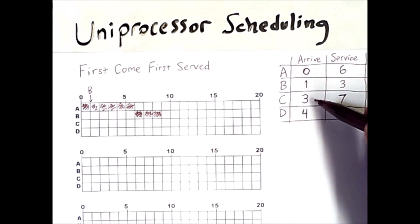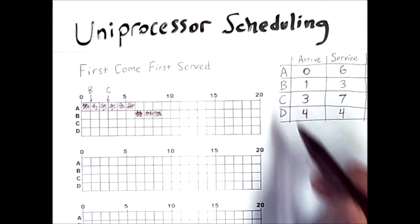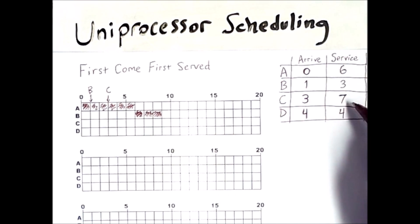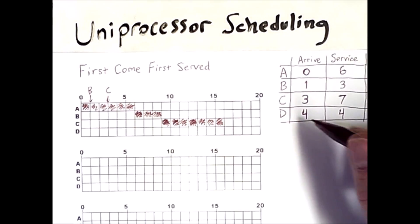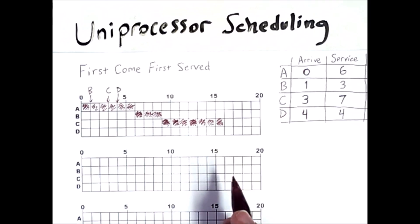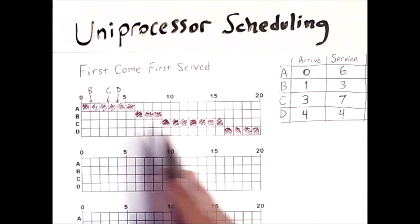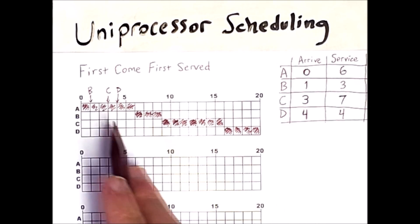Similarly C arrived at time three but had to wait until both A and B had finished but then it can run for seven units of time and D had arrived at time four but had to wait until A, B, and C had finished so it could run for its four units of time right here. So now all four processes have run to completion one after the other.